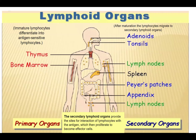There are two kinds of lymphoid organs: primary and secondary. In primary organs, immature lymphocytes differentiate into antigen-sensitive lymphocytes — just maturation takes place. Once they become antigen-sensitive lymphocytes, they migrate to secondary lymphoid organs where the action takes place: they proliferate and become effector cells. The primary lymphoid organs are the thymus and bone marrow — only two. B cells come from bone marrow and T cells come from the thymus.